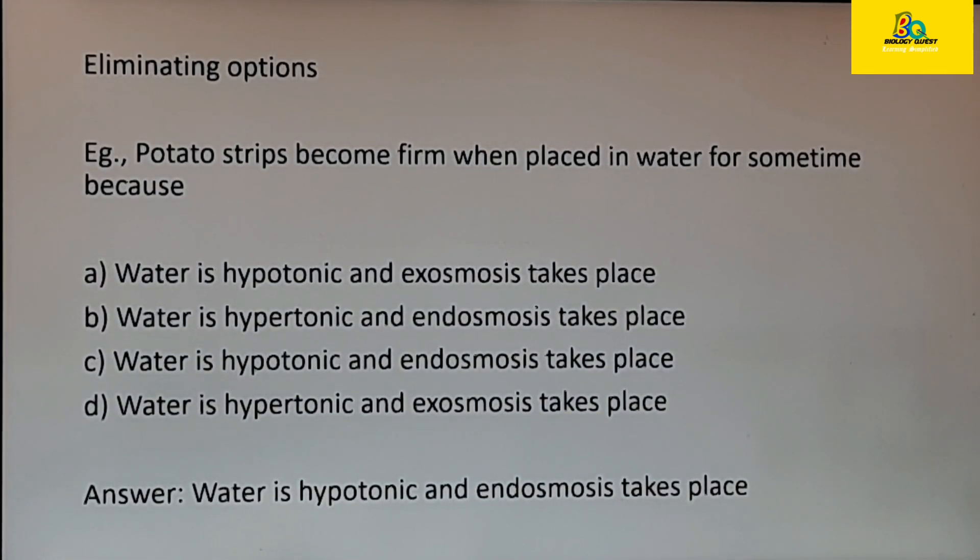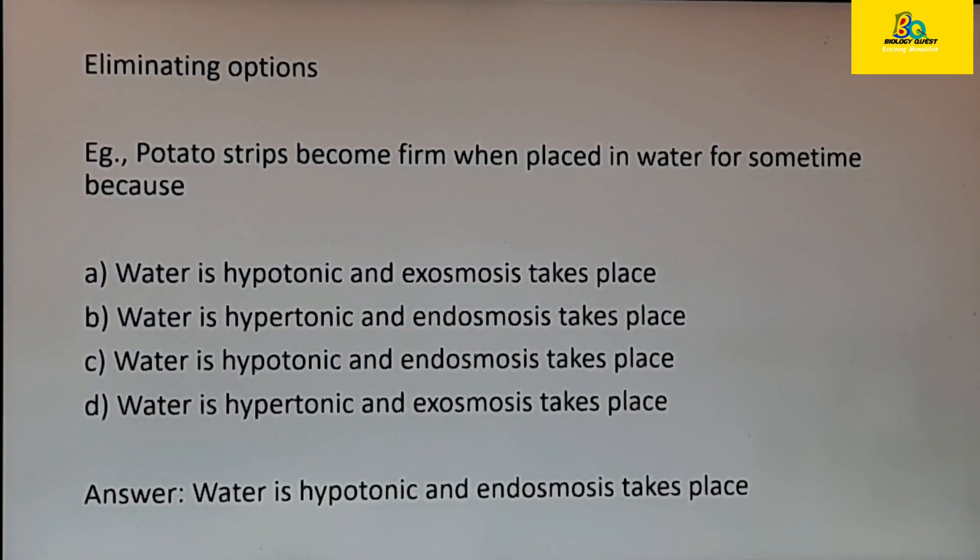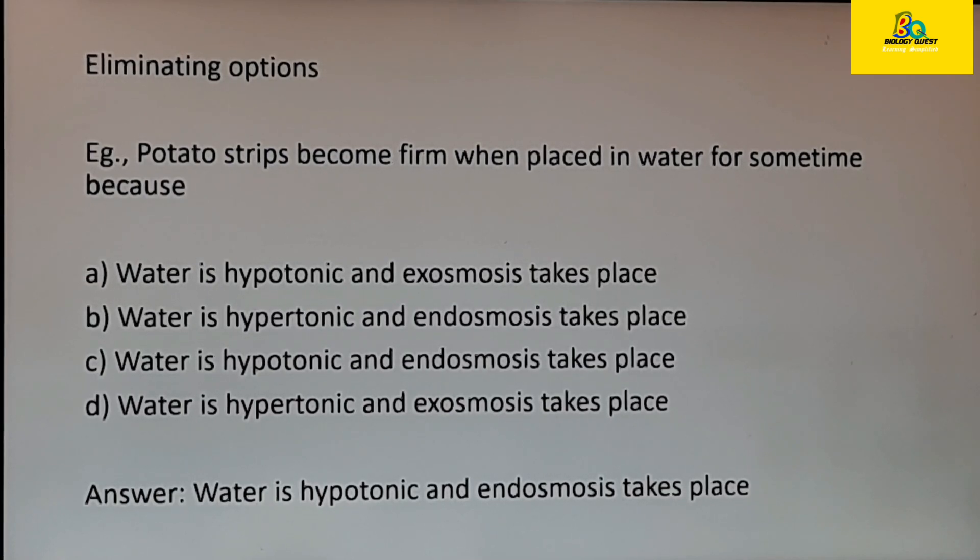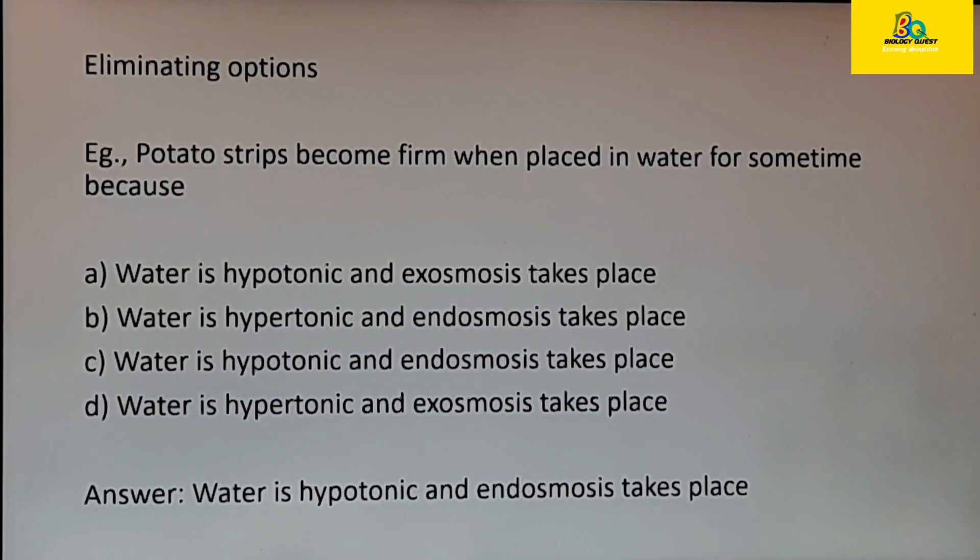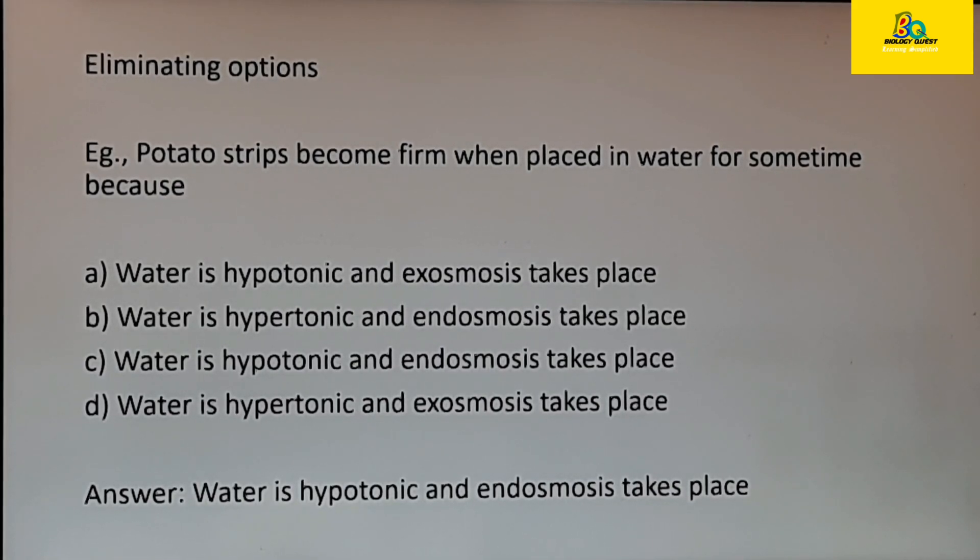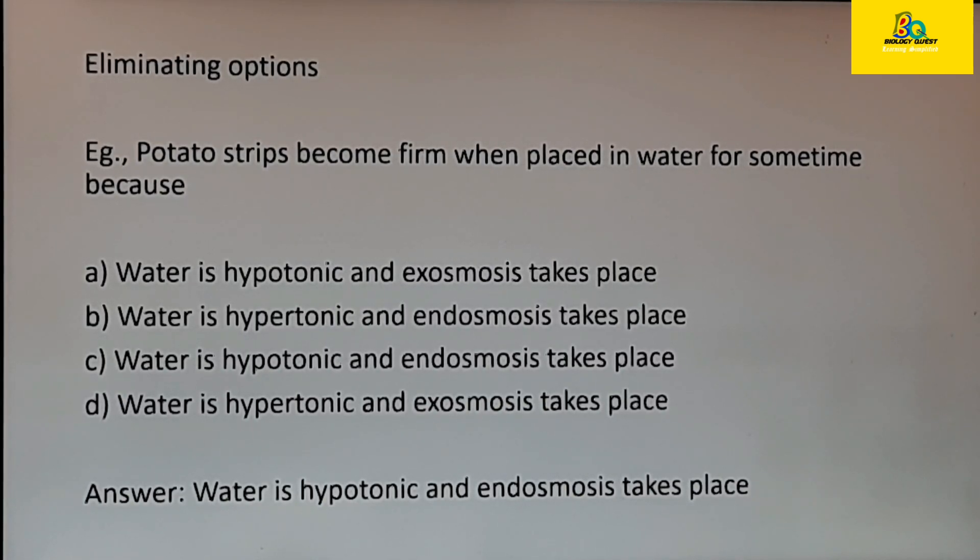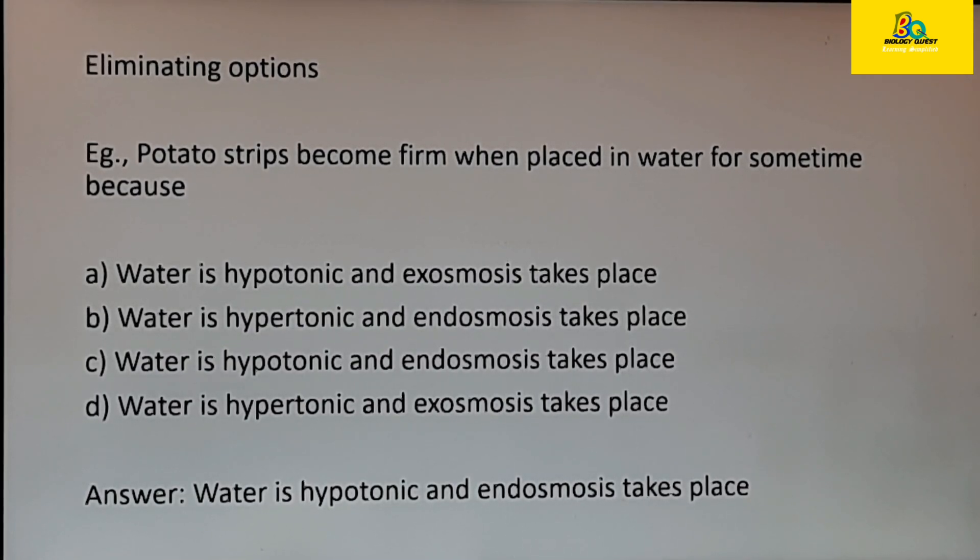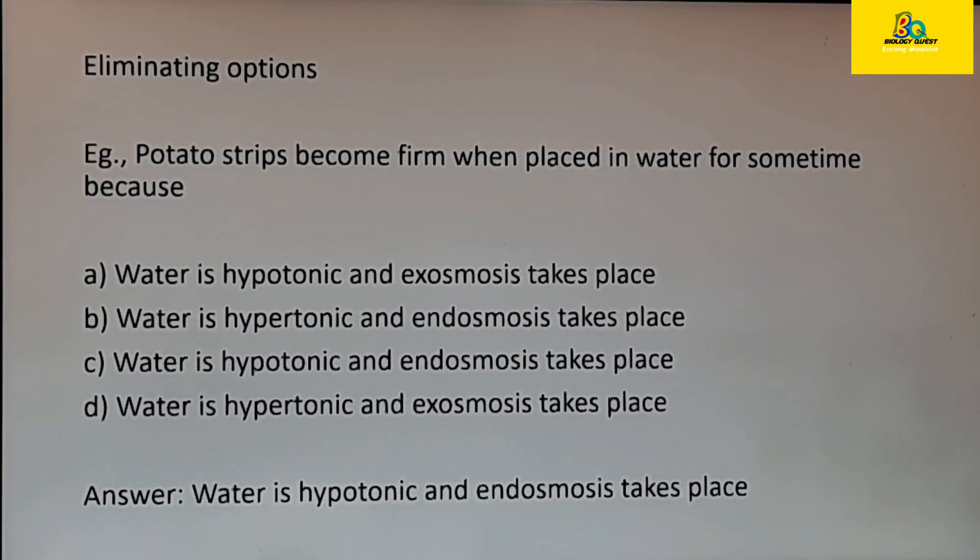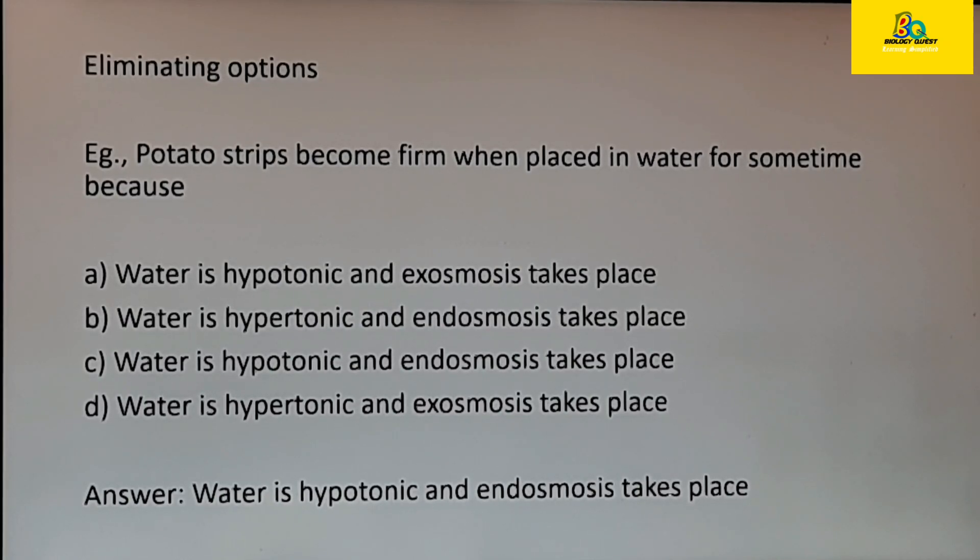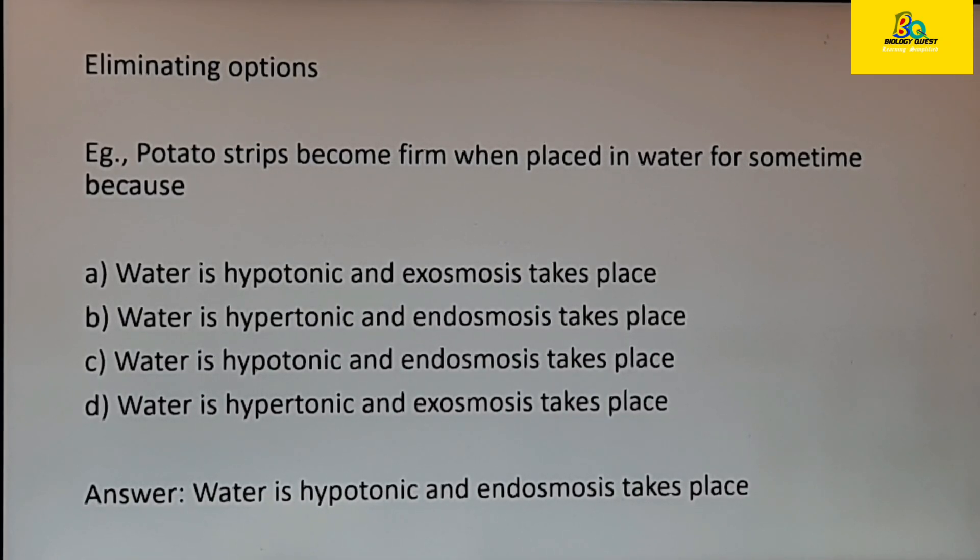Potato strips become firm when placed in water for some time because we know water is hypotonic. So look at the options. You have two terms there, option B and option D say that water is hypertonic. So you can just delete those two options and this has reduced the options to two. Now choose from the two options that you have selected. If water is hypotonic, naturally endosmosis will take place. So that is how you select the correct option.